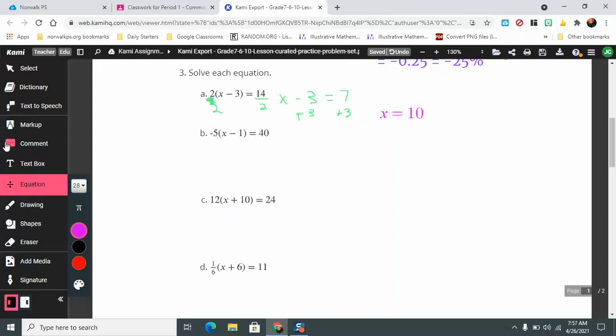If I do the same thing over here, if I divide by negative 5 in this case first on both sides, that's going to mean that what's in the parentheses here, x minus 1, that's going to equal negative 8. Then I'm going to say, what number minus 1 equals negative 8? Well, I can find out if I add 1 on both sides. That means that x is going to equal negative 7.